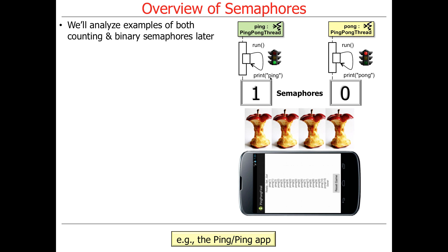Student: I think you just need one semaphore. That will be a homework assignment for you to think about — try to write a correct implementation using only one semaphore. Your mind will spin off into other dimensions. Everybody always thinks you can do it with one. You can't. You have to use two because you can't keep track of the state properly.